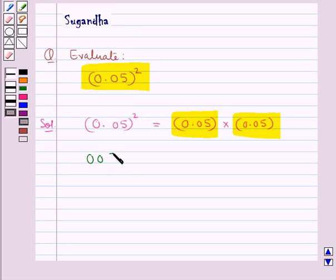That is we have 0.05 multiplied by 0.05 and this is equal to 0.0025 since we know that 5 multiplied by 5 is 25.